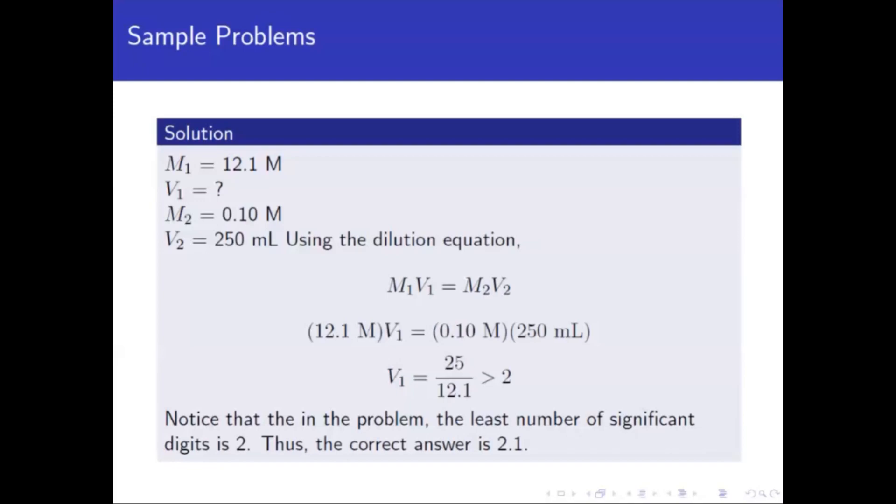So now we set up this equation: M1V1 equals M2V2. So we have V1 is equal to 25 over 12.1. So 0.1 times 250, that's 25, and you just divide by 12.1.